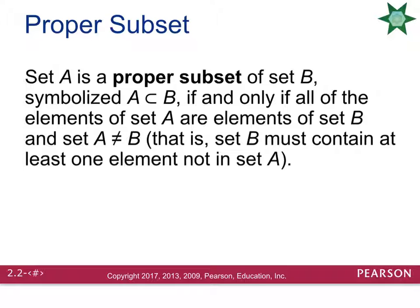Now there's a more specific kind of subset called a proper subset. In a proper subset, the notation changes — they still use the sideways U, but the line is gone from underneath it. That means sets A and B are no longer allowed to equal each other. If they do equal each other, that's a subset but it is not a proper subset. So in a proper subset, all the elements of A must occur in set B, but the two sets cannot be equal.